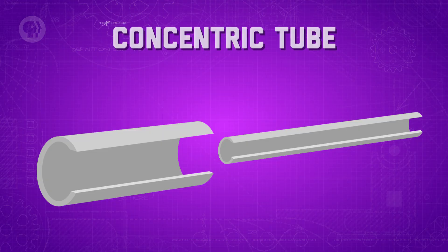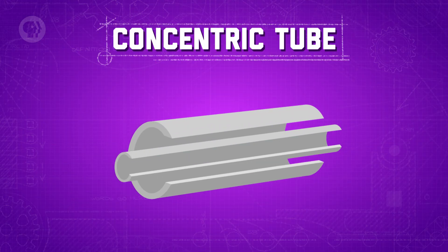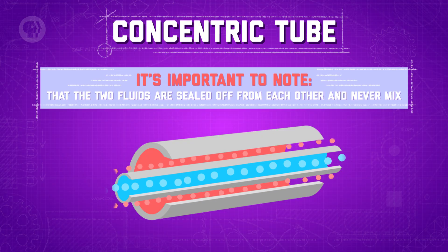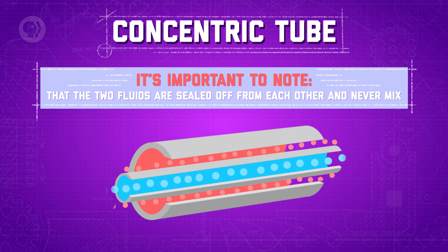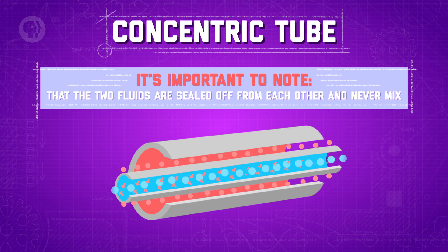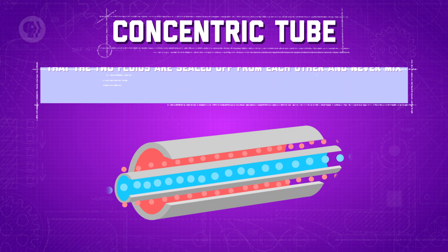The first and most basic example of a heat exchanger is a concentric tube. Here, one pipe or tube is placed inside another one, with a cooler fluid moving through the center tube and a warmer fluid moving through the outer tube. This fluid might be a liquid or it could be a gas. A common place you'd find concentric tube heat exchangers is inside air conditioners. With concentric tubes, and in most heat exchangers you'll encounter, it's important to note that the two fluids are sealed off from each other and never mix. But as the fluid moves down the separate tubes, energy transfers from the hotter outer fluid to the colder inner fluid through the wall of the inner tube. That's the heat transfer.